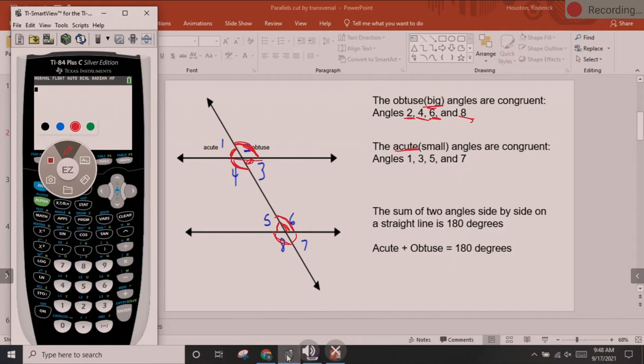Now the sum of those two angles side by side, this acute angle right here and this obtuse angle equals to 180 because they're side by side on a straight line. That's important because we're going to find missing angles using the fact that those two side by side is equal to 180.